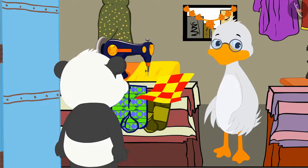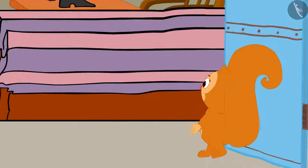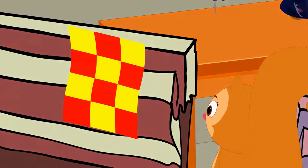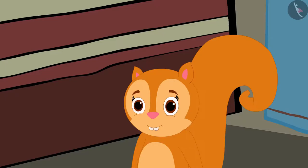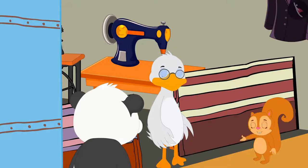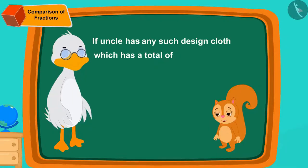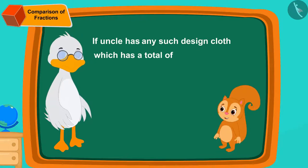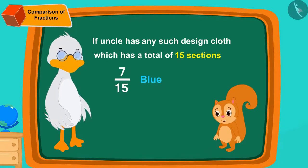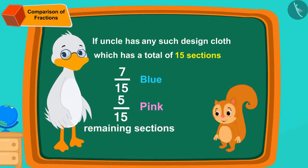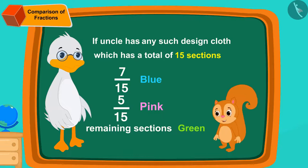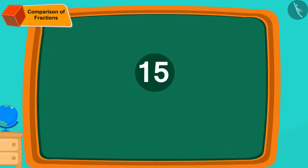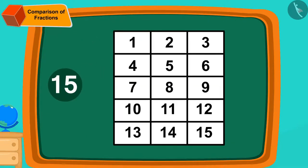While Golu was standing at Uncle's shop, Chanda came there. She saw the design made on Golu's cloth and liked it very much. Now she's asking Uncle if he has any such design cloth which has a total of 15 sections. Of them, 7 fifteenths should be blue, 5 fifteenths pink, and the remaining sections should be green. Children, here 15 means the cloth will be divided into 15 equal parts.